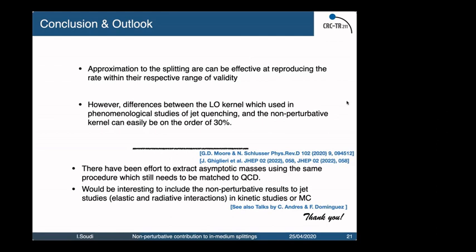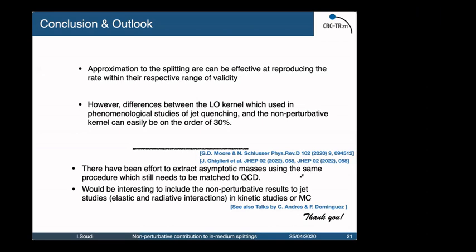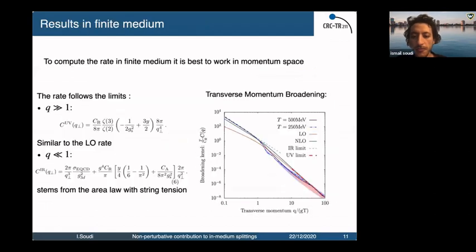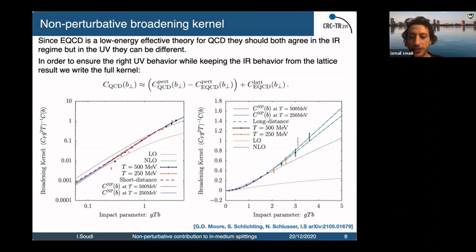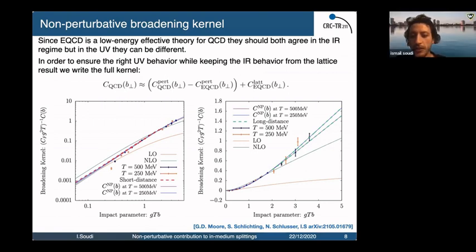Thank you for the interesting results. We have time for a few questions. Do I understand correctly that strictly speaking the non-perturbative result for the collision kernel is only valid at very high temperature because you're assuming that EQCD is the correct effective theory? Yes, this should work only at high temperature, but EQCD has surprisingly been shown to work close to the critical temperature — for thermodynamic quantities it works at around two times the critical temperature.